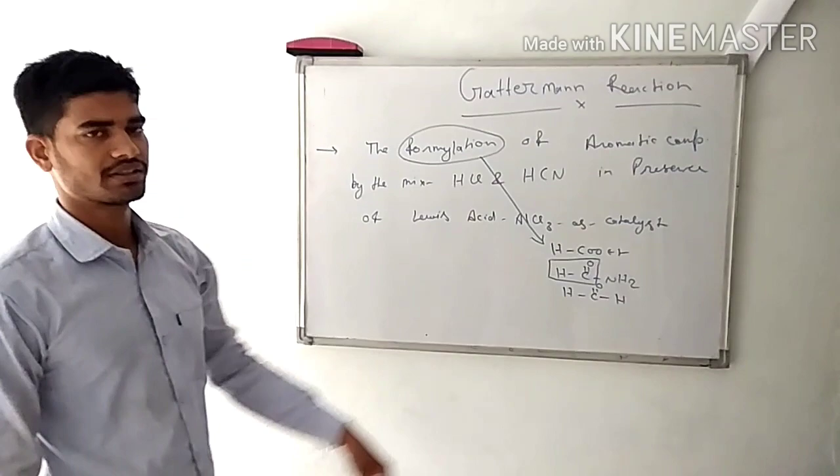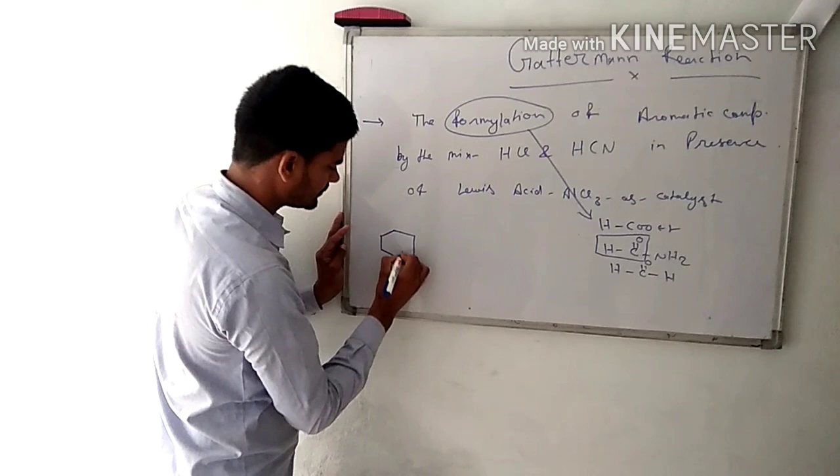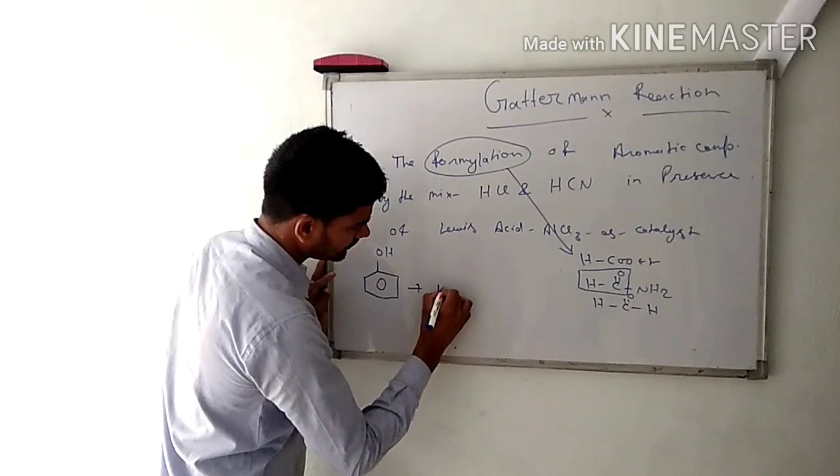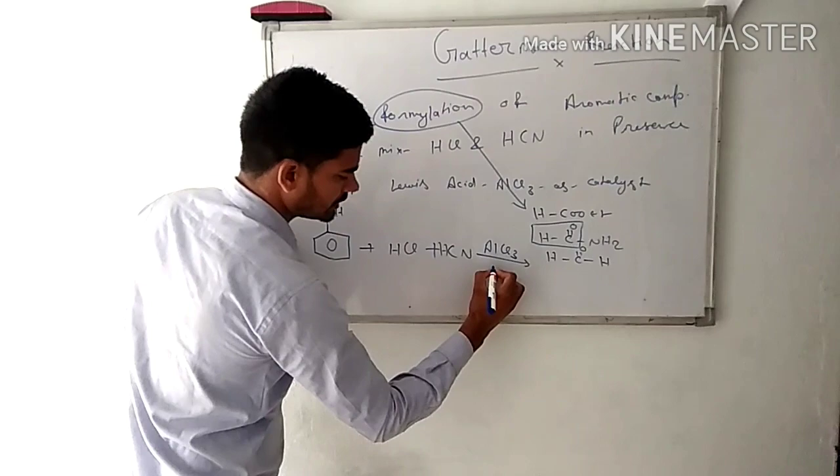Now we see the general reaction for the Gattermann reaction. Here, an aromatic compound - I take a phenol system - reacts with hydrogen chloride and hydrogen cyanide in the presence of Lewis acid